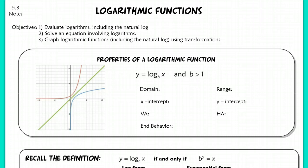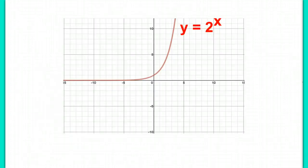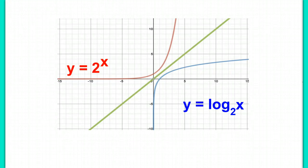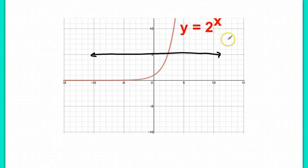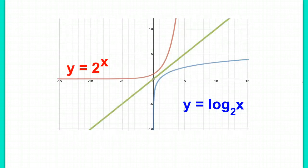Let's begin by talking about logarithmic functions. I'm going to start by looking at the exponential function y equals 2 to the x, then graph the log function y equals log base 2 of x. Hopefully you're noticing that it's actually the inverse of the exponential equation y equals 2 to the x. The reason why y equals 2 to the x has an inverse is because it passes the horizontal line test — it's one-to-one — and because it's one-to-one, it has an inverse, which is y equals log base 2 of x.